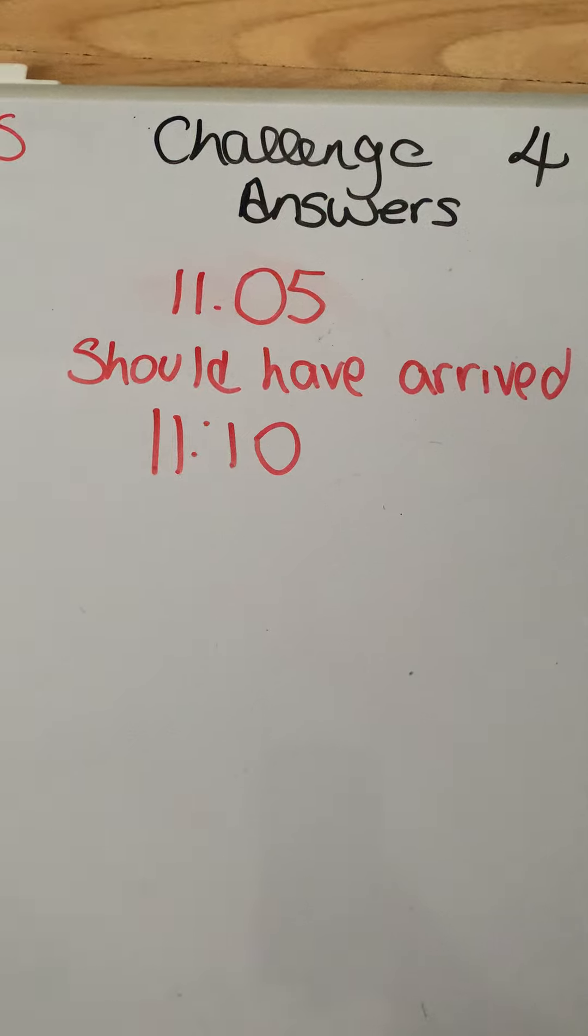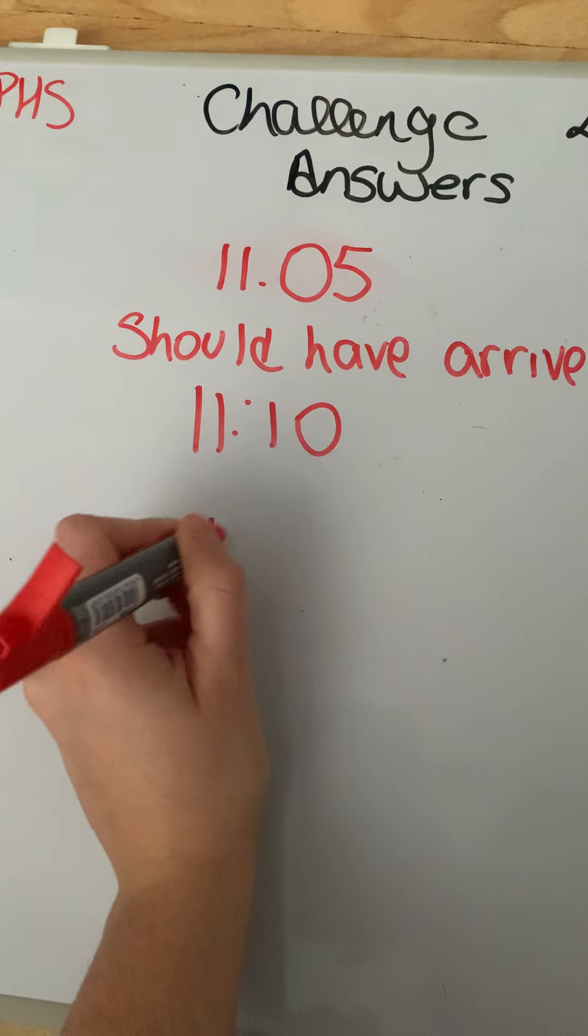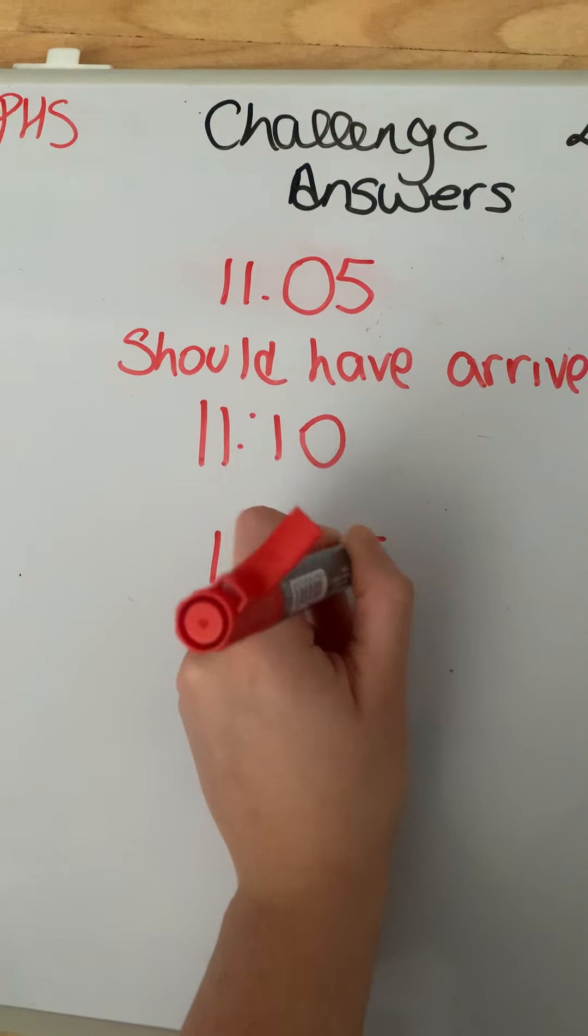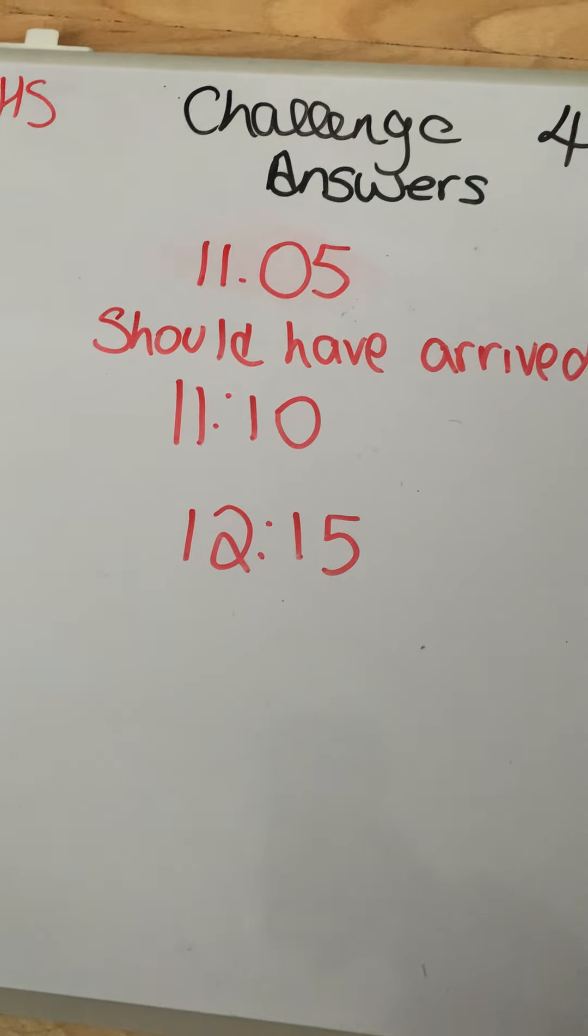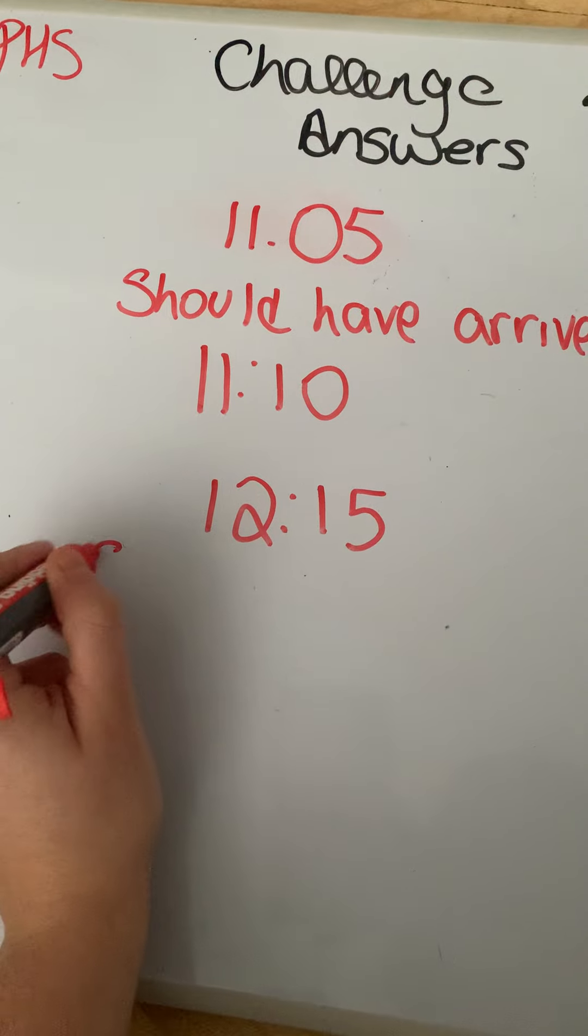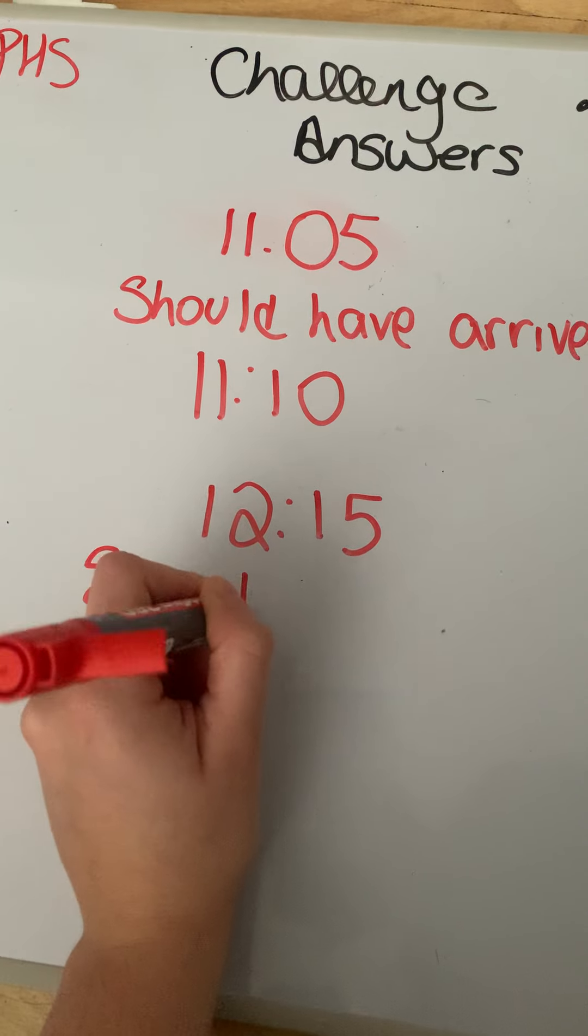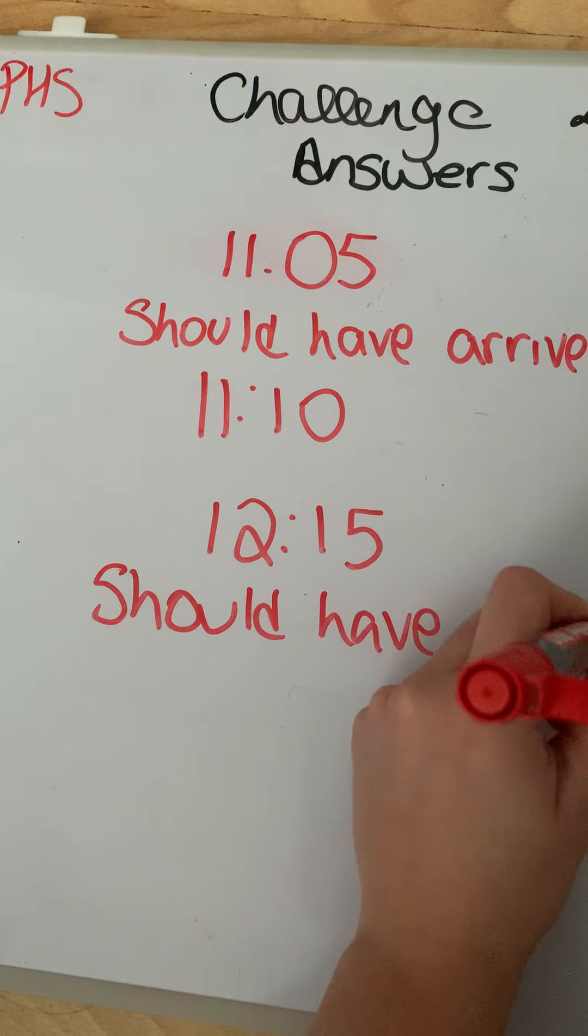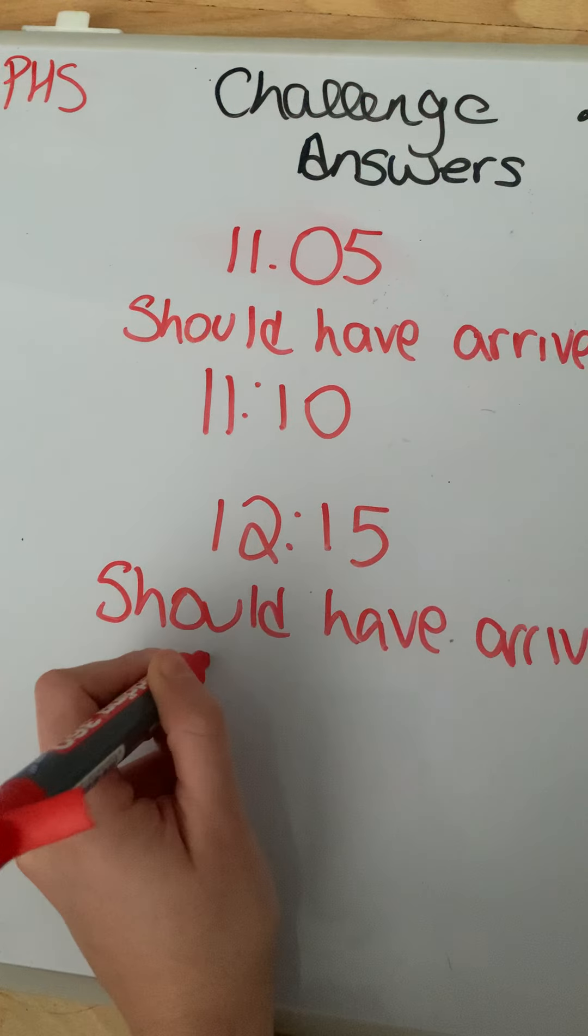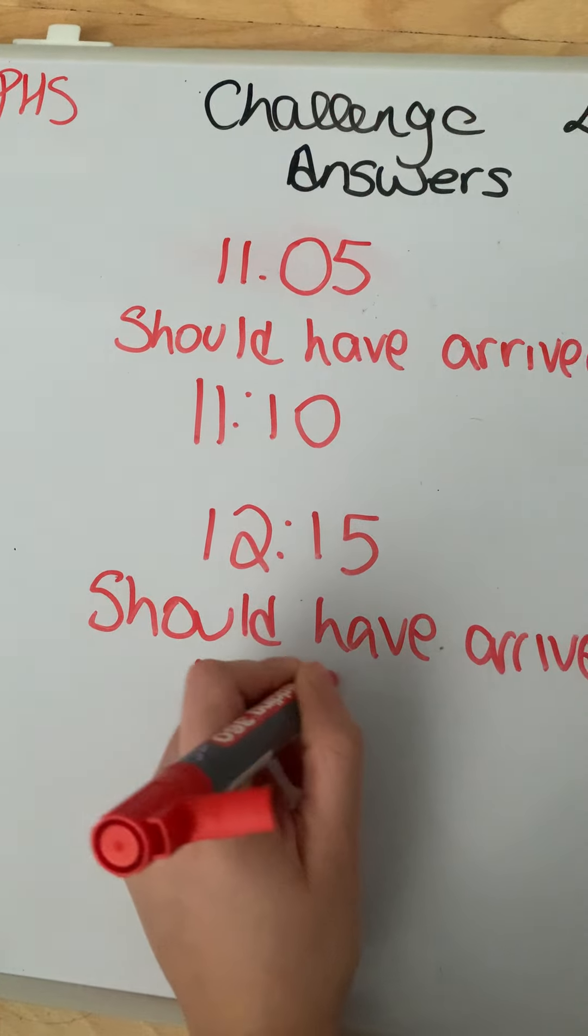We know that it got to her destination at 12:15. But what time should it have got there? Well, it's three minutes late. We know it had to be before 12:15 by three minutes. So we're going to take three minutes off. So it should have arrived at 12:12.